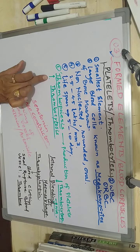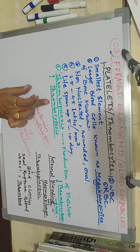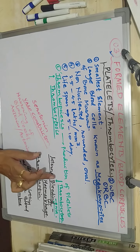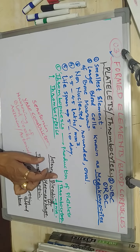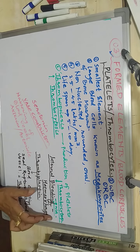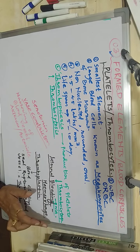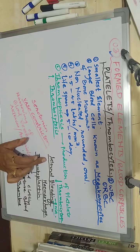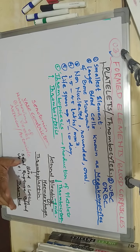If there is an increase in total number of platelets, the term is called thrombocytosis. If there is a decrease in number of platelets or thrombocytes, the term is called thrombocytopenia. Thrombocytopenia can lead to internal bleeding, which is called hemorrhage.